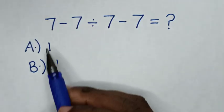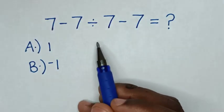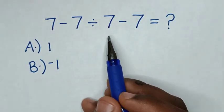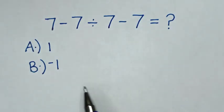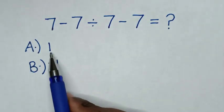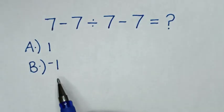Hello, how to solve 7 minus 7 divided by 7 minus 7, selecting from the answers: A=1 or B=-negative 1.